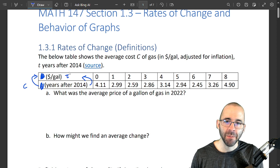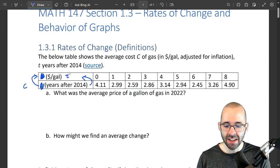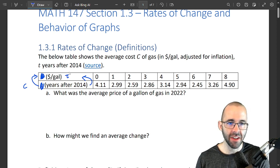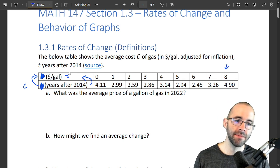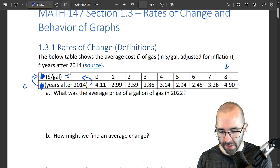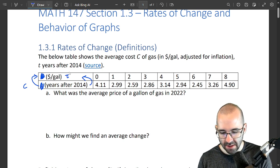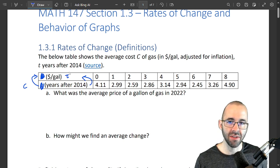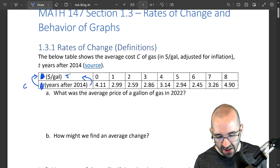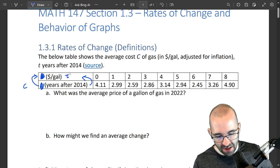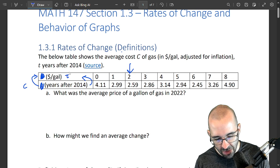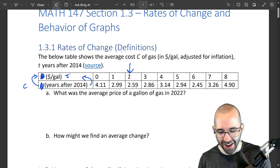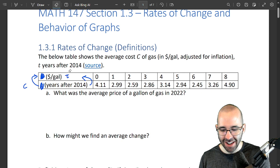We're starting when t is zero, that's going to be 2014, zero years after 2014. We're going up to eight years after 2014, which is 2022. You can see that gas was really expensive in 2014 and got really cheap relatively speaking in 2015, then even got a little cheaper in 2016, and then got steadily more expensive. Oh no, it's jumping around a lot. The shape is a little hard to determine.